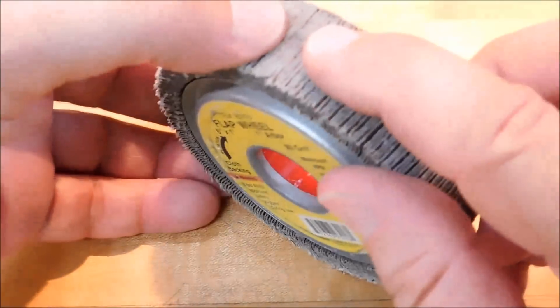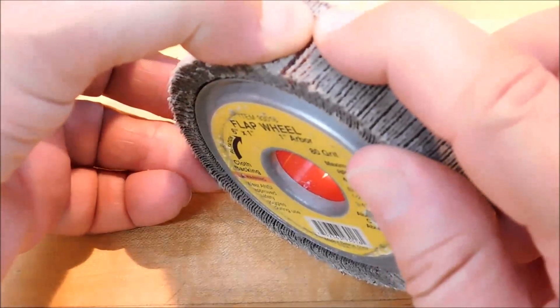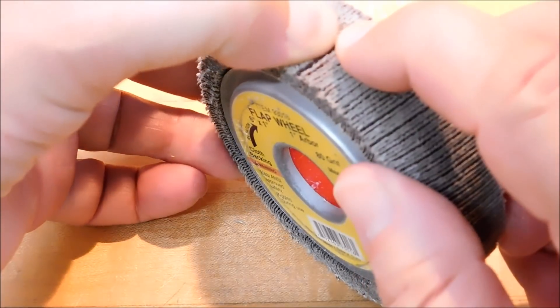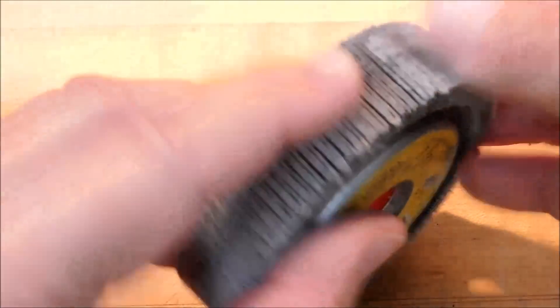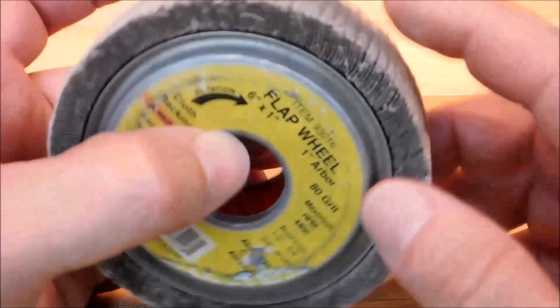This is a flap wheel, a flap sander wheel. One side has got aggressive abrasive grit on it, and the other side has got nothing. So they are directional. They have to turn correctly.